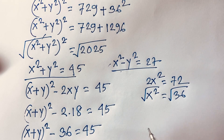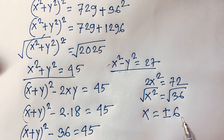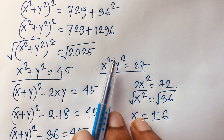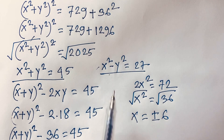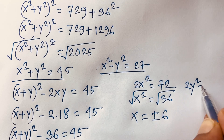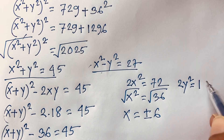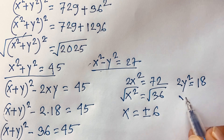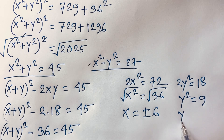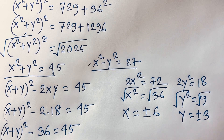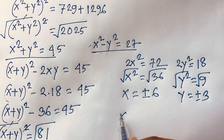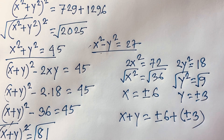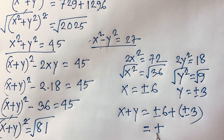Using square root on both sides, x equals plus or minus 6. In the other case, if I subtract both equations, the x squared terms cancel and I get 2y squared equals 45 minus 27, which is 18. Dividing both sides by 2, y squared equals 9, so y equals plus or minus 3. Therefore, x plus y equals plus or minus 6 plus plus or minus 3, and our final answer is plus or minus 9.